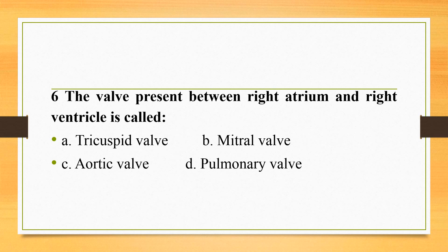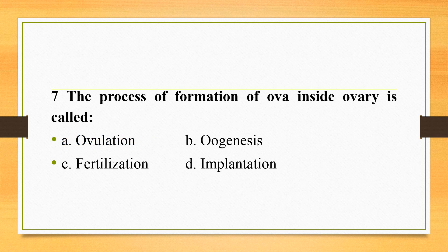The valve present between the right atrium and right ventricle is called the tricuspid valve. The mitral valve is present between the left atrium and left ventricle. The aortic valve is present between the aorta and left ventricle. The pulmonary valve is present between the pulmonary artery and right ventricle.